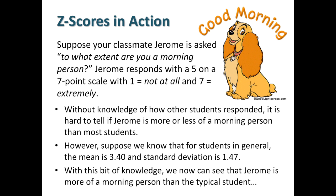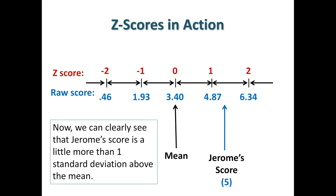Watch what happens when we go to the next slide. Here is a graphic representation of what's happening. We have the mean in the center — think number line, zero — and then positive goes this way, negative goes this way. Standard deviation is 1.47, and they're equal. One standard deviation above the mean would be 4.87. Two standard deviations would be 6.34. But Jerome is a 5, which is slightly above one standard deviation above the mean.